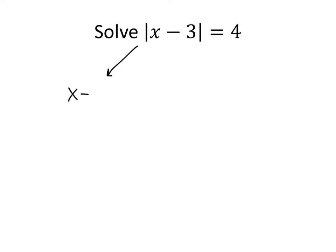One possibility is that the thing inside the absolute value bars is just 4 itself, in which case the absolute values aren't doing anything. But the other possibility is that the thing inside the absolute value bars is actually negative 4, in which case the absolute value is getting rid of that negative sign and producing the result of 4. So we're going to have two solutions.